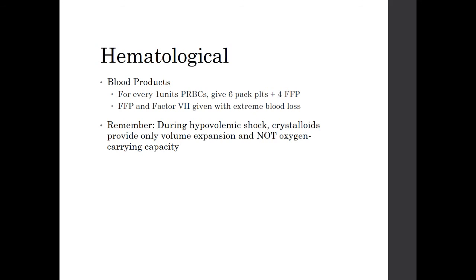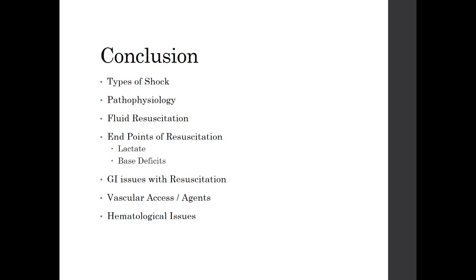For blood products: for every one unit of packed red blood cells, give a six-pack of platelets plus fresh frozen plasma. As you administer two or three packed red blood cells, match with six-pack of platelets and FFP. FFP and Factor VII given with extreme blood loss is rare. Remember that during hypovolemic shock, crystalloids provide only volume expansion and not oxygen-carrying capacity — this is why we also give blood.